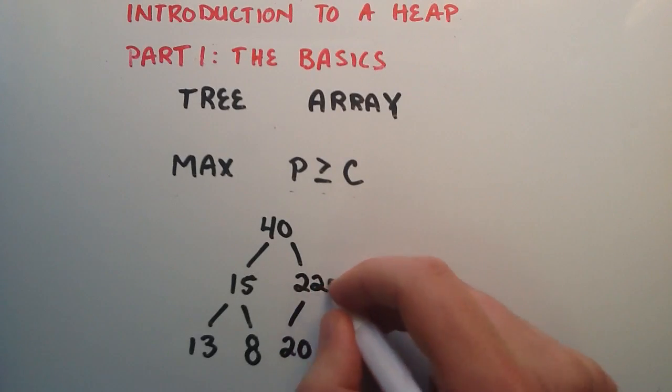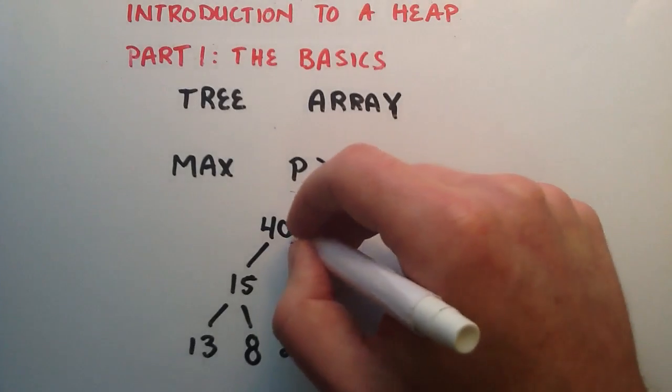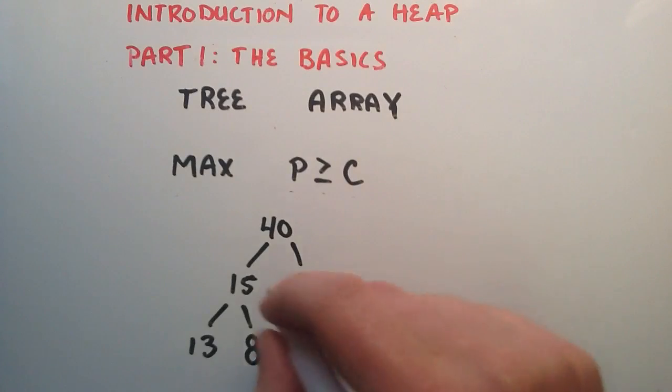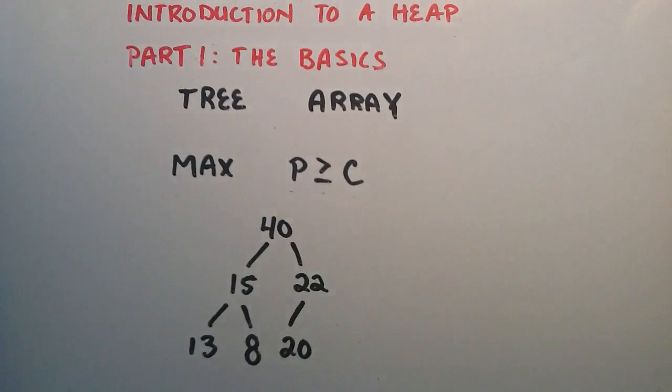And then once again we check the value of 22 with its new parent, and now we have the right parent-child relationship. 40 is greater than 22, so now we have our max heap established once again.